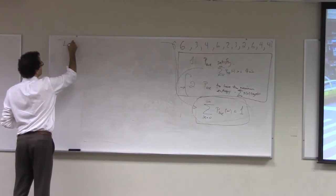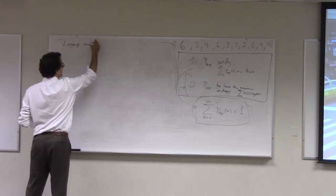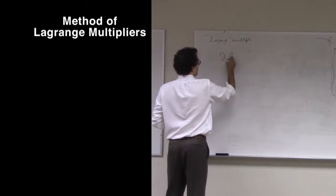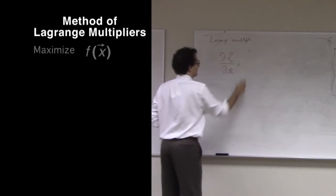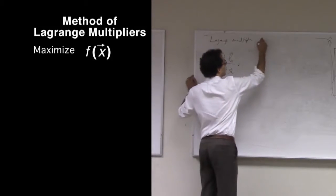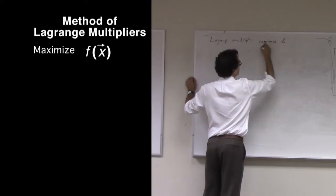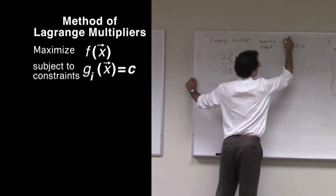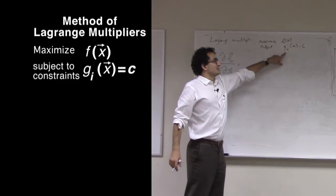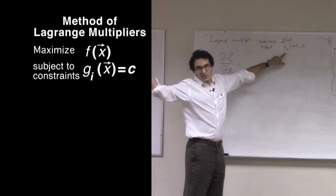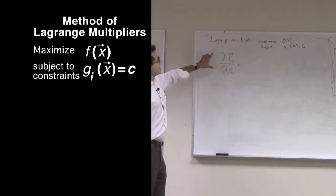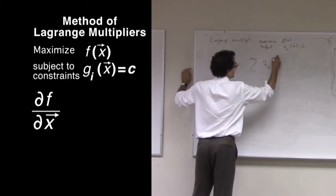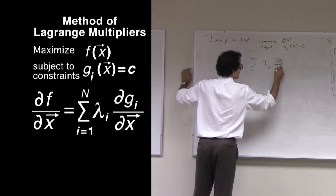Here is how to do Lagrange multipliers — the method of Lagrange multipliers. The Lagrange multiplier is that lambda term, and that's where the method gets its name from. You want to maximize the function f subject to a set of constraints, numbered g sub i: g1, g2, all the way through your n constraints. The way you do that is you set the gradient of the function equal to a linear combination of the gradients of the constraints.